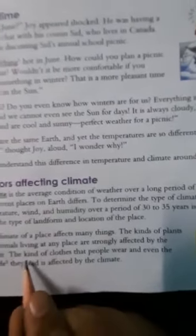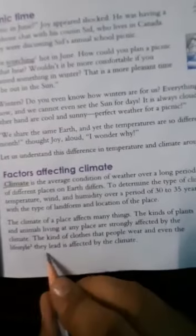The climate of a place affects many things. The kinds of plants and animals living at any place are strongly affected by the climate, the kind of clothes that people wear and even the lifestyle they live. The land is affected by the climate. Lifestyle means the way in which a person or a group of people live or work.